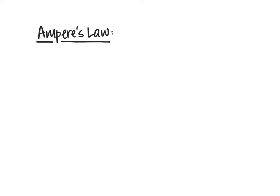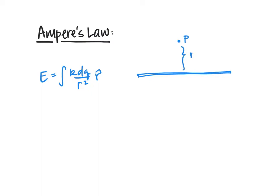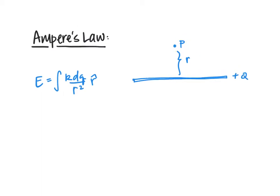When we first discussed the electric field due to a charged surface or distribution of charges, we used the electric field being the integral of k dq over r squared times r-hat. We evaluated this for a line of charge at a point P a distance r away, finding all of the electric field contributions due to all the little pieces at point P.